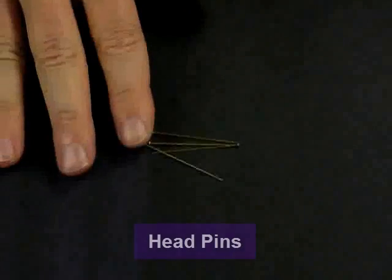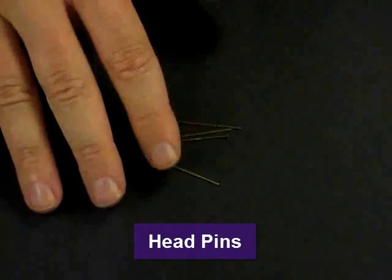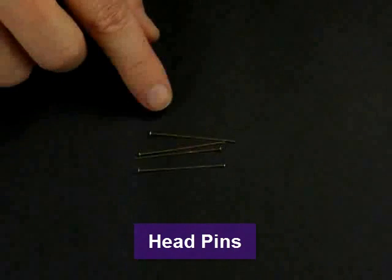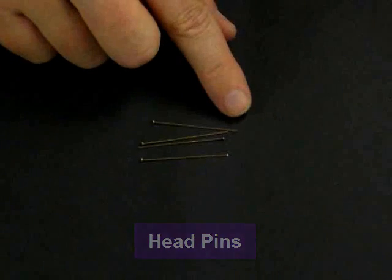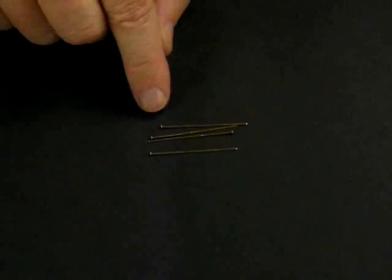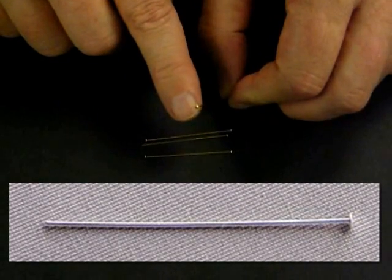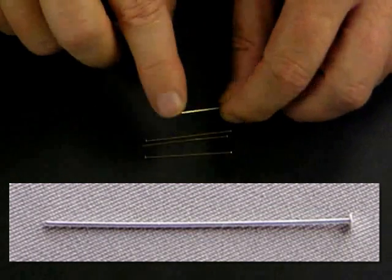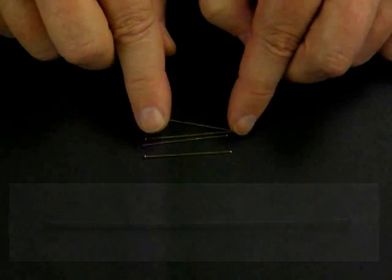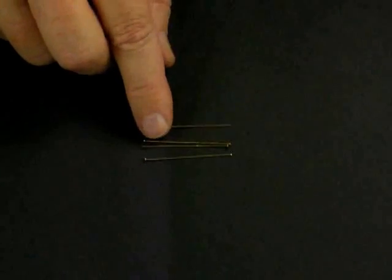So those are our ear wire findings. The next type of finding that we'll discuss here is our head pins. Head pins come in a variety of thicknesses and a variety of lengths. Head pins are like a straight pin that would be used in sewing. They have a head that is enlarged, just like the head of a pin, and that's large enough that it won't go through the hole on most beads. They're not sharp on the end, so that's where they're different from a regular straight pin.